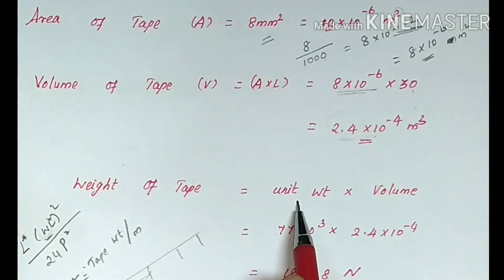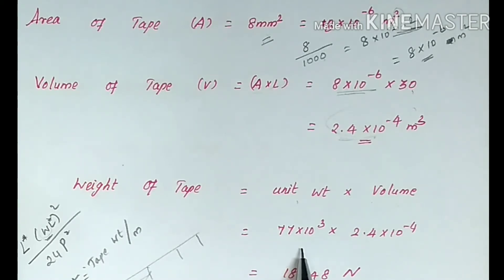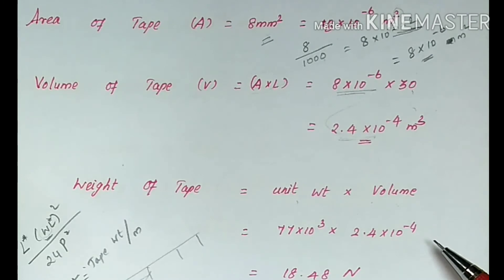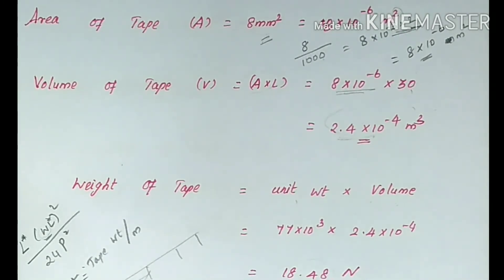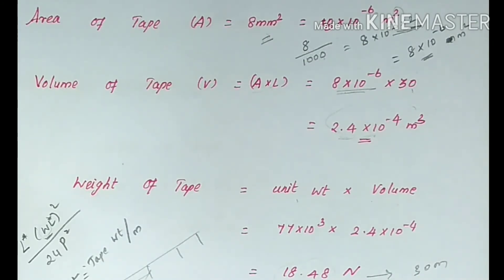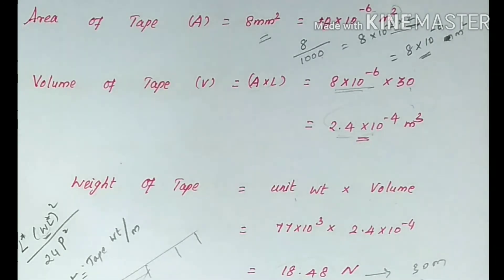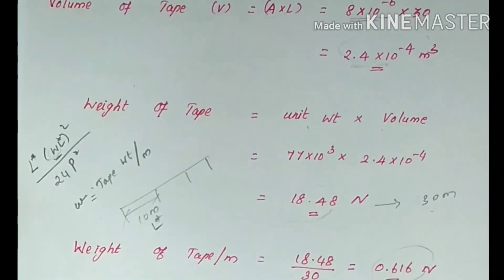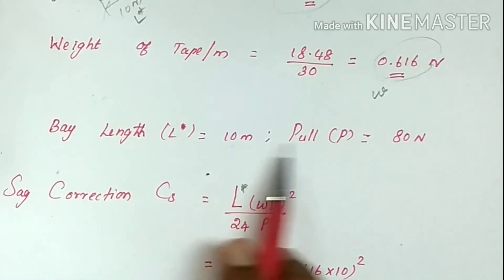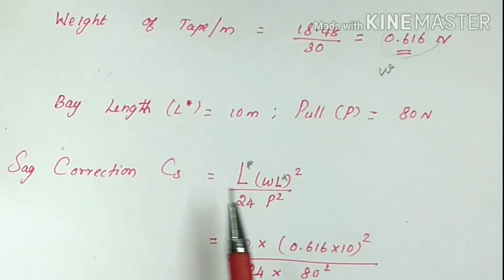Now we solve for the weight of tape. The formula is unit weight × volume. Unit weight is 77 kN/m³, so weight = 77 × 2.4 × 10⁻⁴ = 18.48 N for the total 30 meter tape. To get weight per meter, we divide by 30: 18.48 ÷ 30 = 0.616 N/m. So small w = 0.616 N/m. The bay length L* is 10 m and pull P is 80 N.